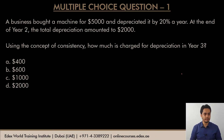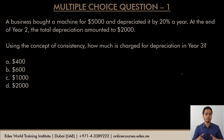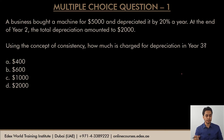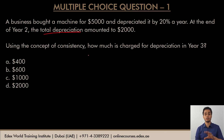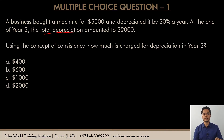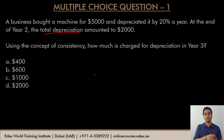The first question: a business bought a machine for $5,000 and depreciated it by 20% in one year. At the end of year two, the total depreciation was $2,000. Keep in mind, this is not the depreciation for year two only — this is total depreciation. Using the concept of consistency, how much depreciation will be charged in year three? Consistency states that whenever a business selects a method of depreciation and rate of depreciation, that has to be consistently applied in all future years as well.